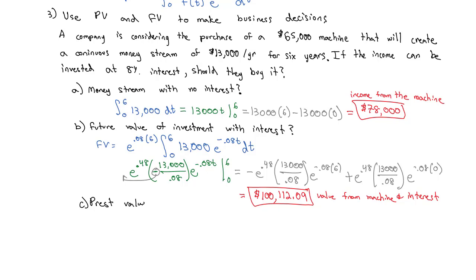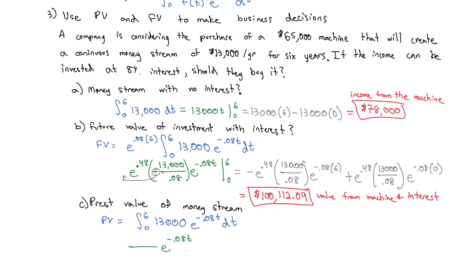The present value is equal to the integral from 0 to 6 of the money stream, $13,000, times e to the negative 0.08 — the interest rate — times t, dt. This integrates to e to the negative 0.08t, and we divide by the derivative of that exponent due to u-substitution, giving us negative 0.08 in the denominator with 13,000 on top, evaluated from 0 to 6.